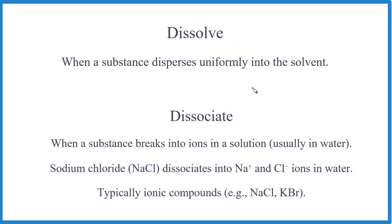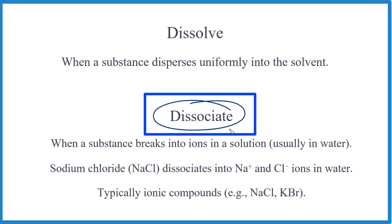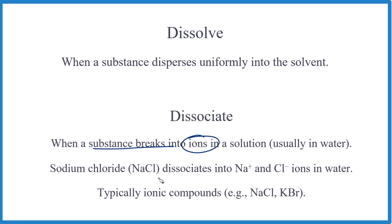There's a special type of dissolving called dissociation, or when it dissociates. In this case, it actually breaks apart into ions — and that's the key: ions. These ions are uniformly dispersed in the liquid, usually water. They interact with the water, and the water spreads them out evenly. So sodium chloride dissociates into the sodium ion and the chloride ion in water. Typically, we're talking about ionic compounds here.